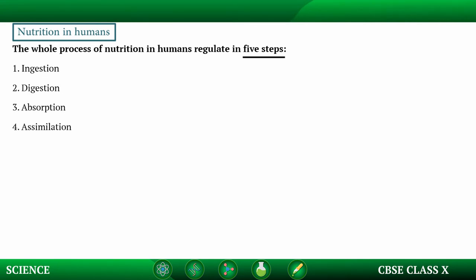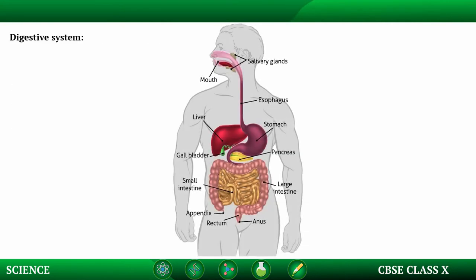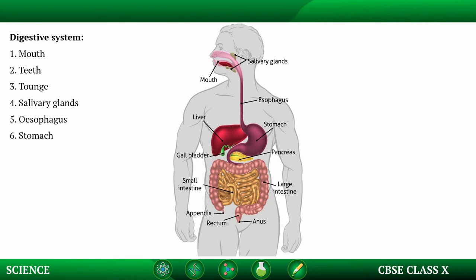Assimilation, and Ejection. These are the 5 steps for the process of nutrition, followed by different organs of the digestive system of humans, such as the mouth, teeth, tongue, salivary glands, esophagus, and stomach.